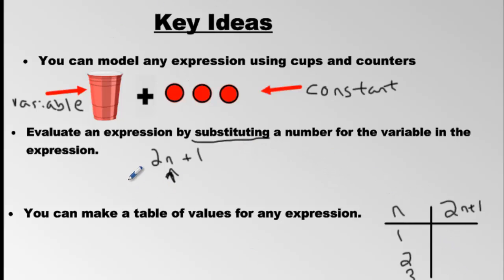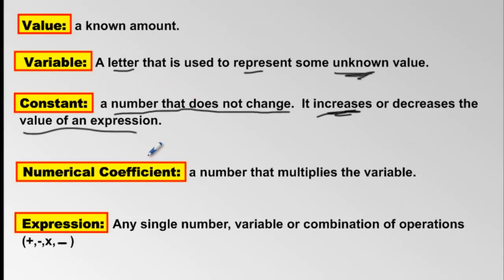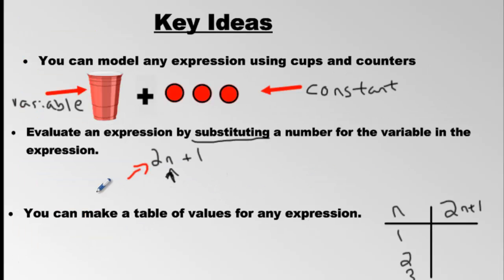One thing that I forgot to show you is that number that multiplies the variable. This is the variable multiplied by two. What do we call those numbers again that multiply the variable? The coefficient is a number that multiplies the variable. These are called coefficients. So do make a note of that.